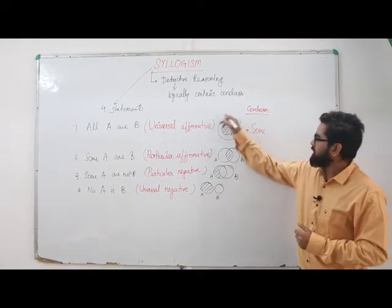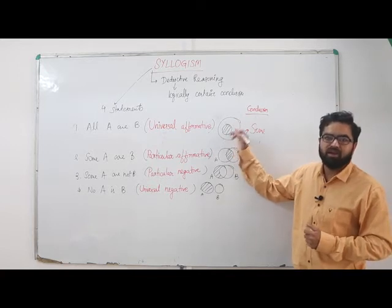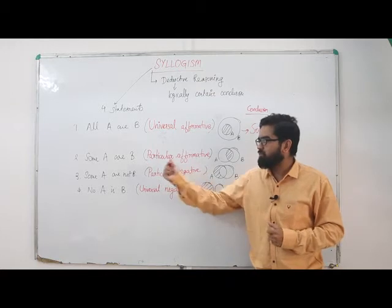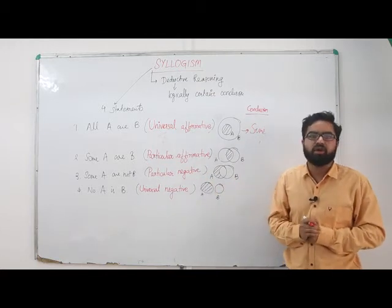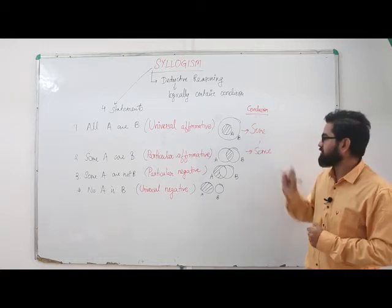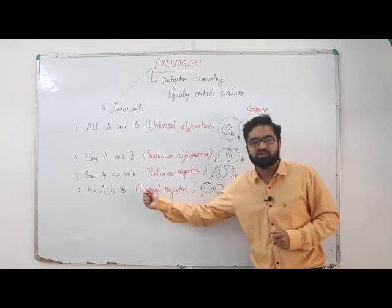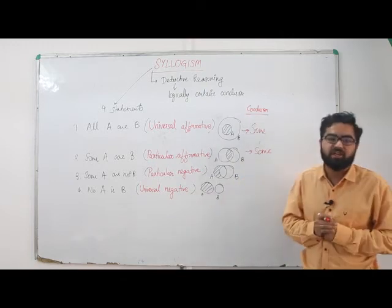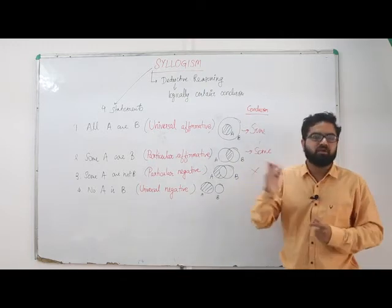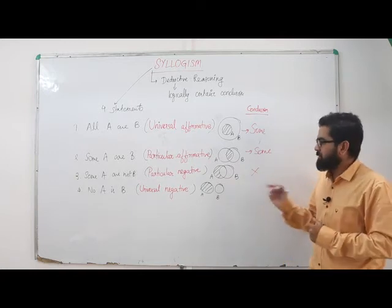Some elements of B are also part of A. For the second statement, 'Some A are B,' the relationship from B to A is again 'Some B are A.' Whenever we have 'some not' statements, we cannot draw any conclusion, so no conclusion from B to A.